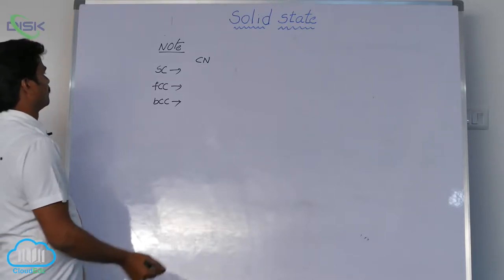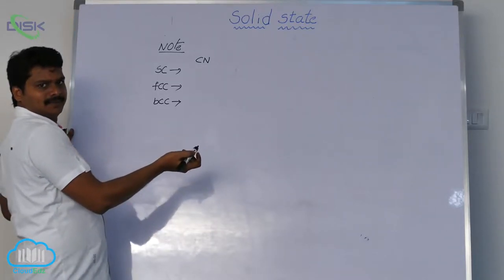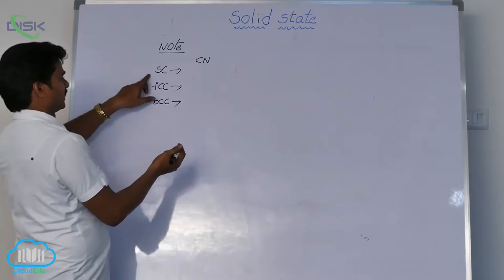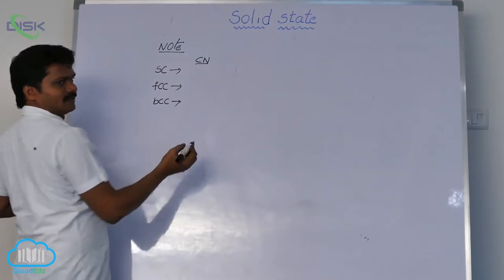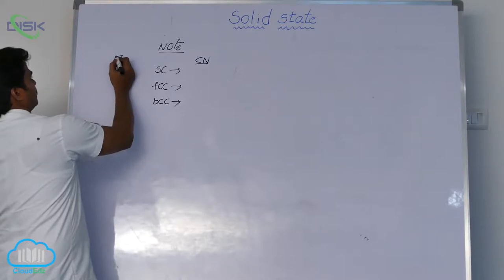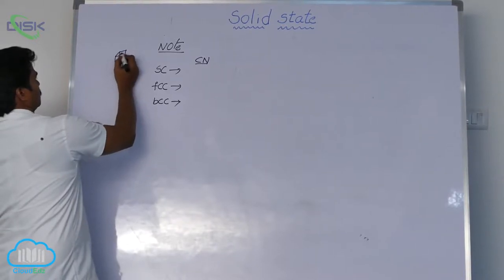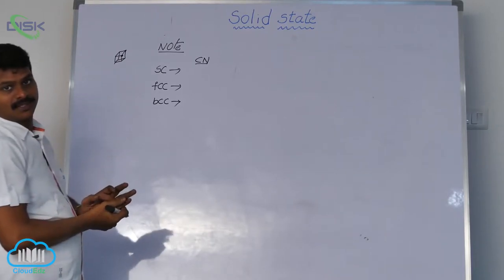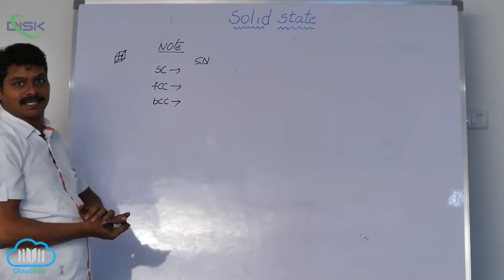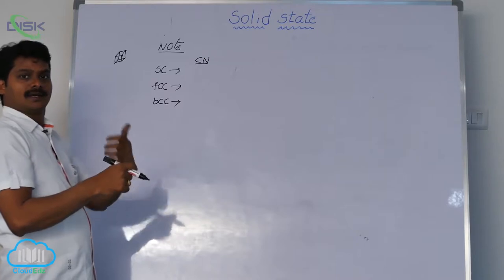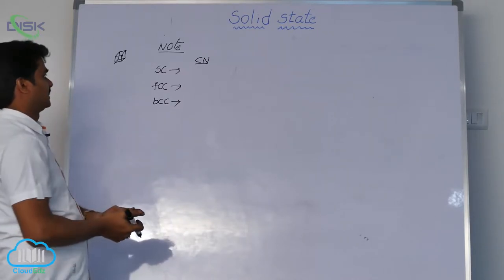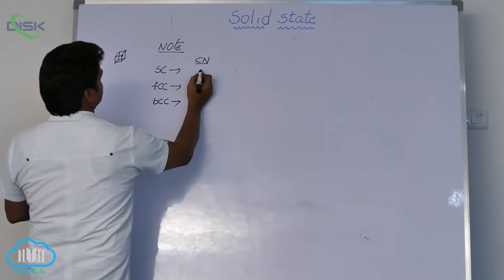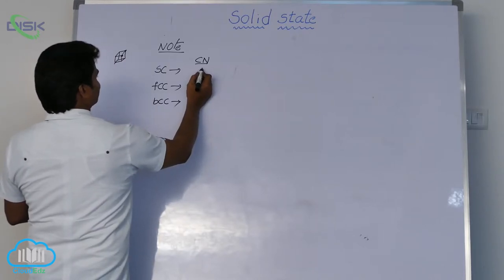In simple cubic system, the coordination number - here in cubic system where the atoms are, you see in a simple cubic system only atoms are present at the corners. So each corner is with nearest neighbors 8. That is why in simple cubic system, the coordination number is 6.